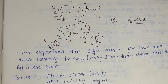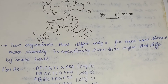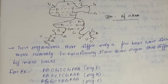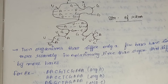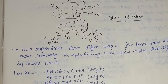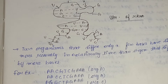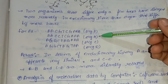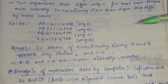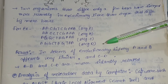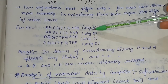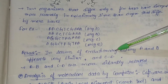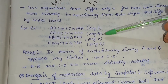Two organisms that differ by only a few bases have diverged more recently in evolutionary time than organisms that differ by more bases. As we know, A, G, T, C are the nitrogenous bases in DNA, and in RNA, uracil replaces thymine. For example, comparing organisms A, B, C, and D respectively — in terms of evolutionary history, A and B appear to be very similar as they have similar base pairing, while C and D are more distantly related from these two.